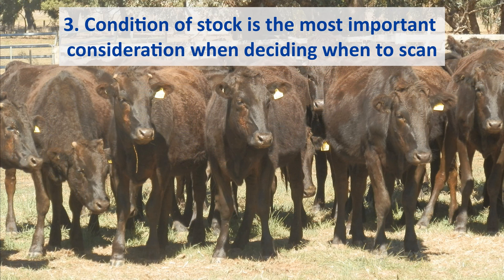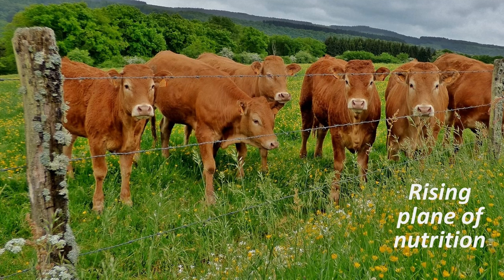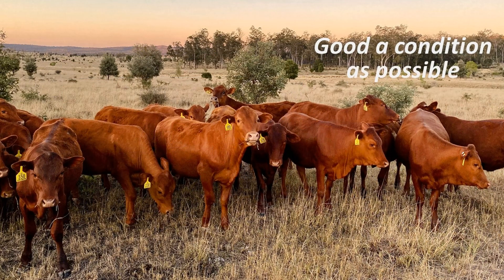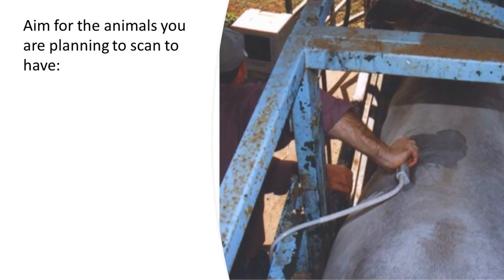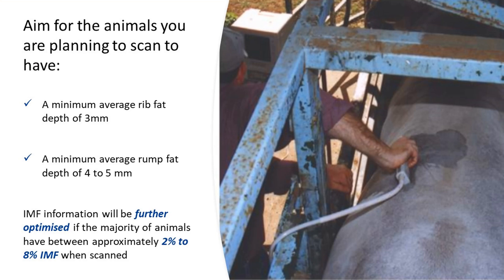Condition of stock should be the most important consideration when deciding when to scan your animals. To obtain the most effective results, it is recommended that animals are scanned when they have been on a rising plane of nutrition and are in as good a condition as possible. Aim for the animals you are planning to scan to have a minimum average rib fat depth of three millimetres and a minimum average rump fat depth of four to five millimetres. IMF information will be further optimised if the majority of animals have between approximately two to eight percent IMF when scanned.